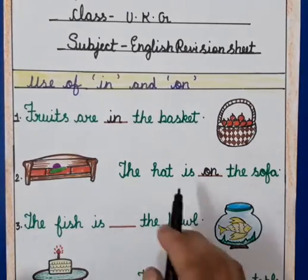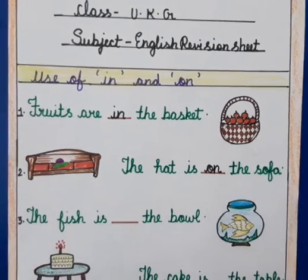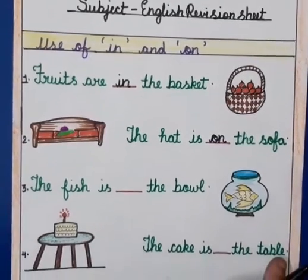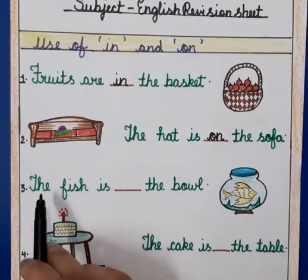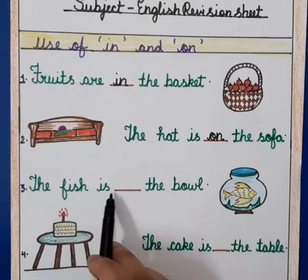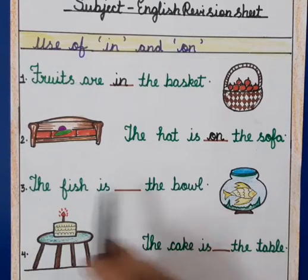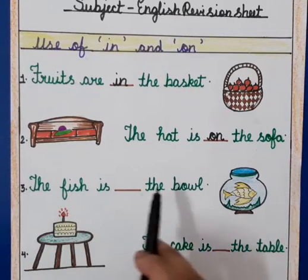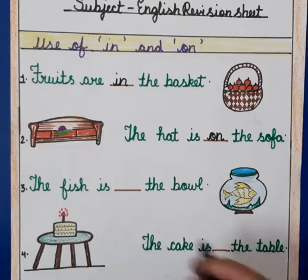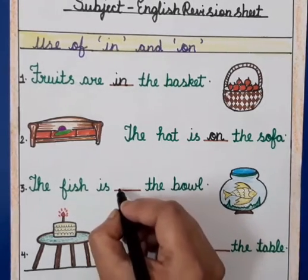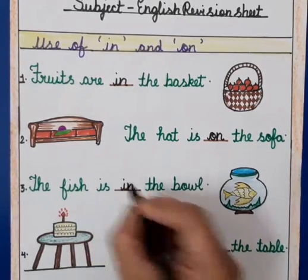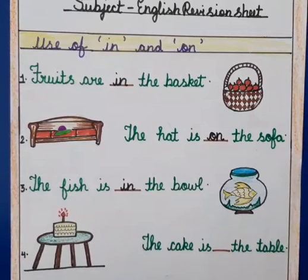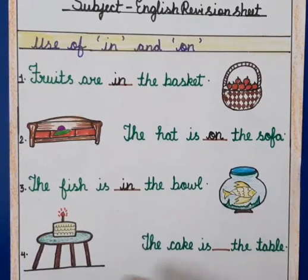Now: 'The fish is in the bowl.' So we will write 'I' and 'in' here. The fish is in the bowl — fish bowl ke andar hai.